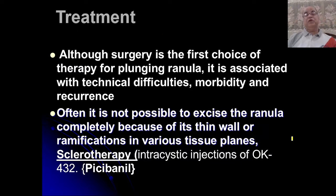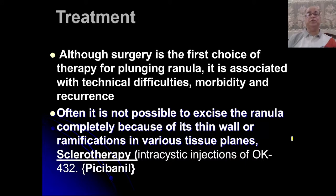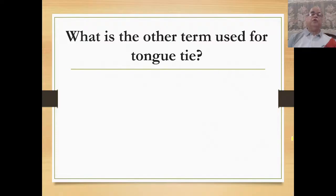In plunging type ranula, the neck must also be opened, which is associated with technical difficulties, higher morbidity, and higher recurrence. In cavernous type ranula, due to thin walls and ramifications in various tissue planes, complete excision may not be feasible. In those cases, intracystic injections of sclerosing agents such as OK-432 as sclerotherapy have been used.